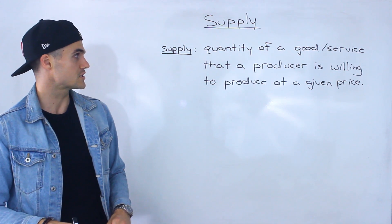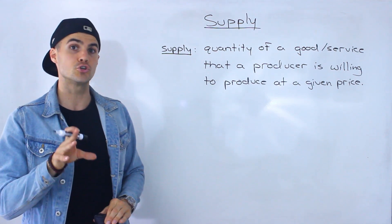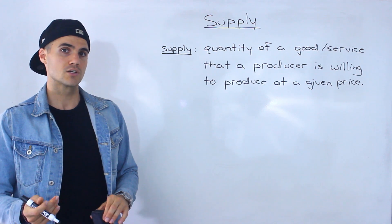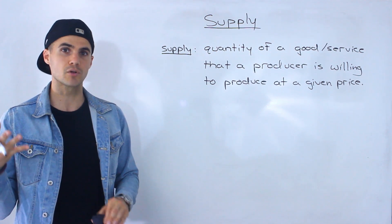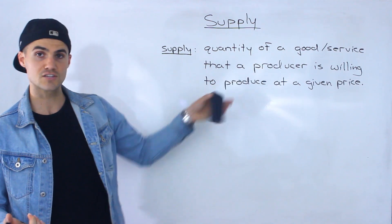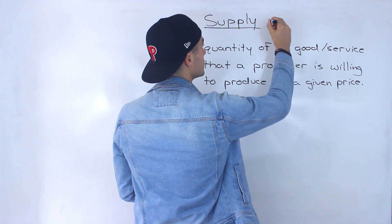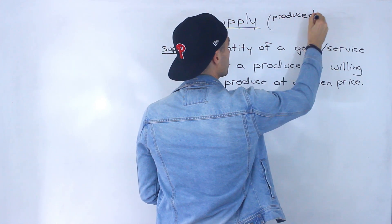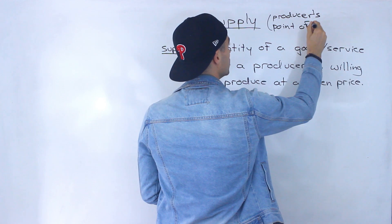Let's start off with the definition. Supply is basically the quantity of a good or service that a producer is willing to produce at a given price. Notice the difference in the definitions between demand and supply — demand was from the consumer's perspective, while supply is from the producer's perspective or point of view.